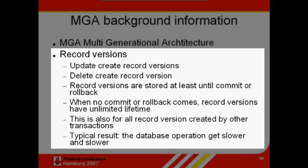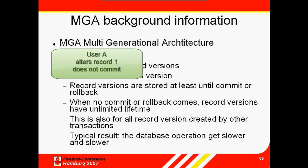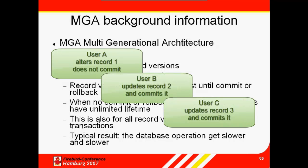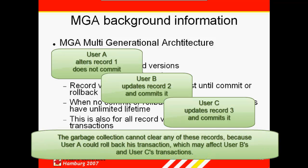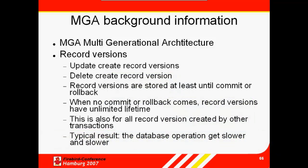These record versions are not just saved for open transactions. For example, if I am user A and I open a dataset, make an amendment, but do not commit or rollback — I leave the transaction open — user B comes along, makes an update and commits it, and user C makes an update and commits that. These record versions that users B and C have made cannot be cleared by garbage collection, because theoretically user A could rollback his transaction, which may affect users B and C's transactions. Such open transactions will inevitably lead to slower database performance if they are never closed. The system only slows down when one of the clients starts a transaction and doesn't end it properly. We'll take a look at the effects of this later when we look at the log file.